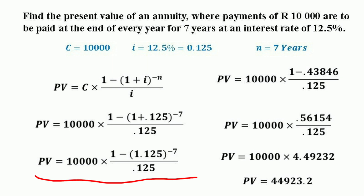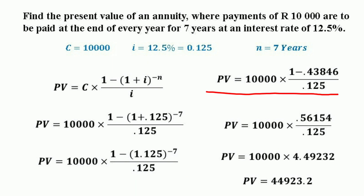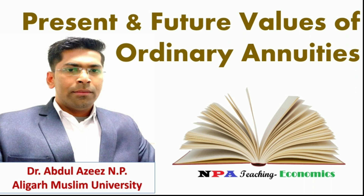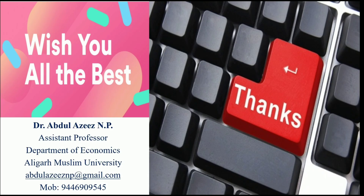Solving: 10,000 × [1 − (1.125)^(−7)] / 0.125 = 10,000 × [1 − 0.43846] / 0.125 = 10,000 × 4.49232 = 44,923.2. So, the present value of the annuity is equal to 44,923.2. I hope you are clear about how to calculate the present and future value of ordinary annuities. In the next video, we will discuss the present and future value of annuity due. Have a nice day and see you in the next video. Thank you.